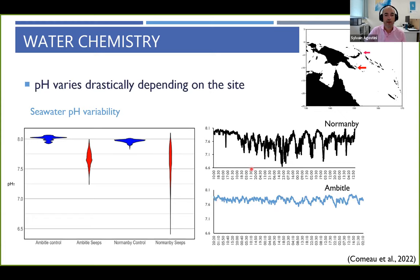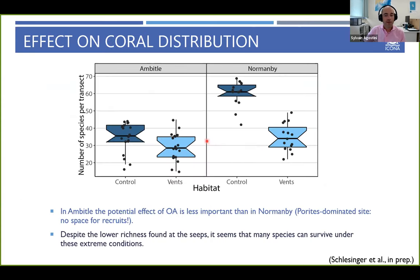What Ricardo and his team found is that in both Ambitle and Non-Mambai, the diversity of stony corals was reduced. But coral abundance was most importantly reduced at the Non-Mambai site, where the full ecosystem is completely dominated by some massive Porites. The hypothesis is that there is no more space for recruits from perhaps less resistant species, causing a drastic shift in the coral community. However, you can still find quite a lot of species, which highlights that some species or individuals within corals may be able to survive acidification.